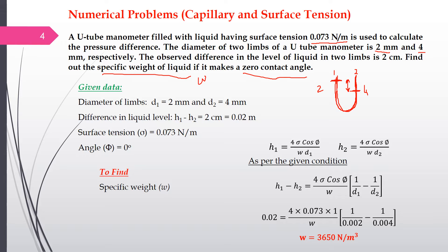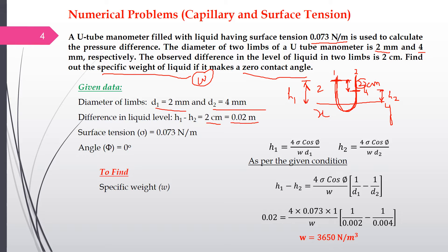The given values are: d1 = 2 mm, d2 = 4 mm, and h1 − h2 = 2 cm. Taking a reference level x and y, h1 and h2 correspond to the liquid levels in each limb. So h1 − h2 = 2 cm, which in SI units equals 0.02 meters.